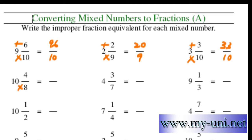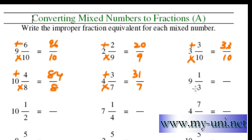8 times 10 is 80. 80 plus 4 would be 84. 84 over 8 would be the answer. 7 times 4 is 28. 28 plus 3 is 31. 31 over 7 is the answer. 9 times 3 is 27. 27 plus 1 is 28 over 3.